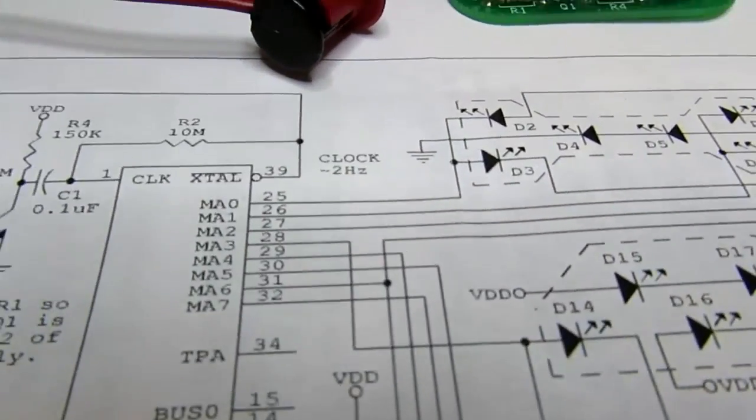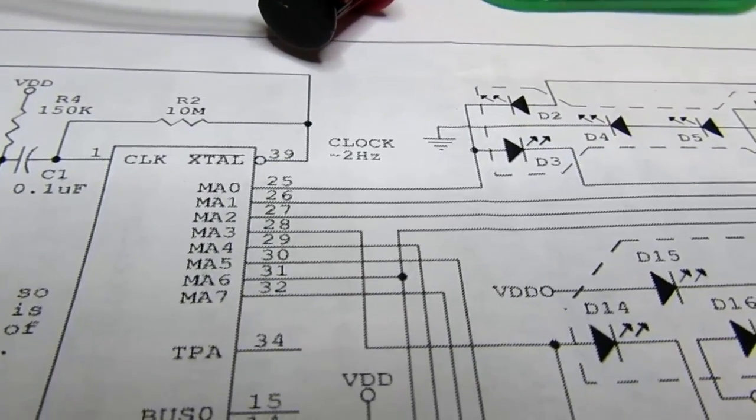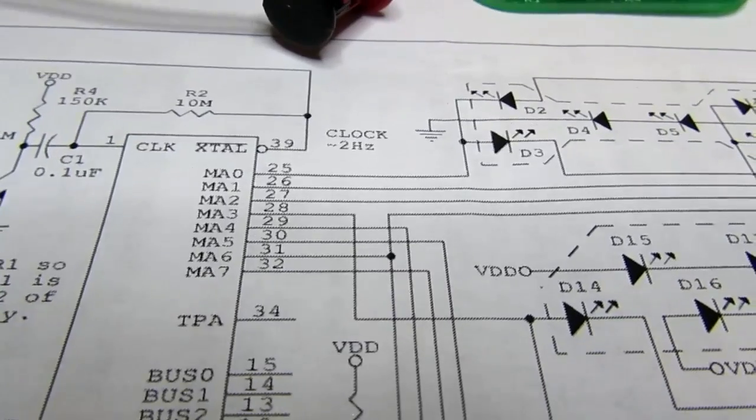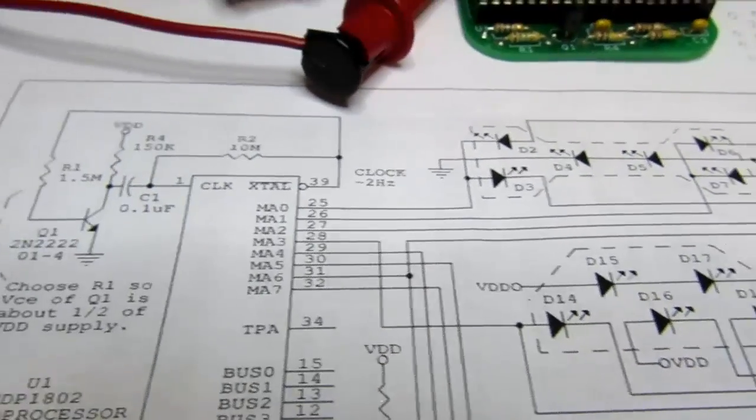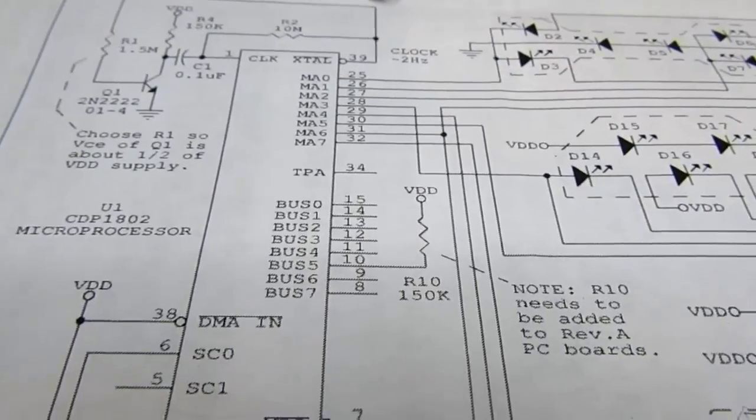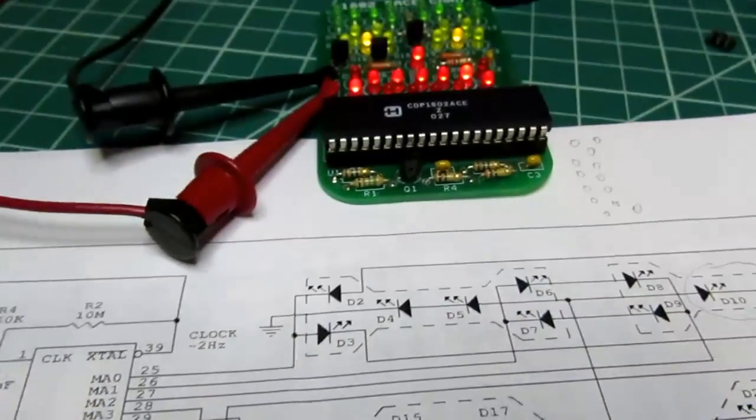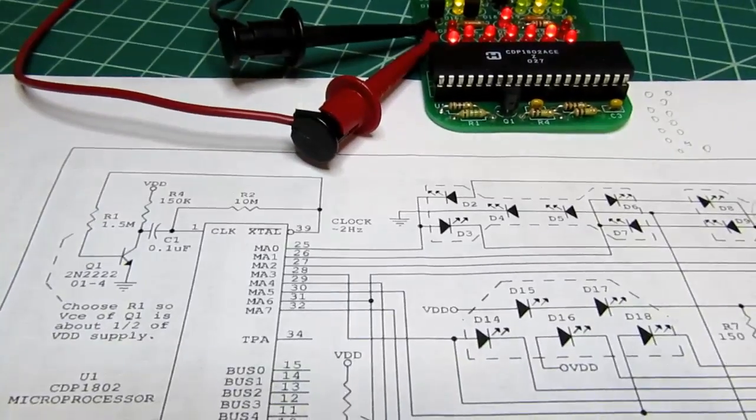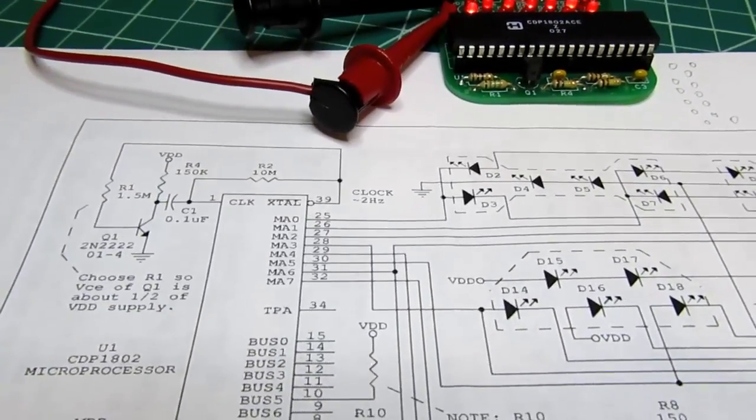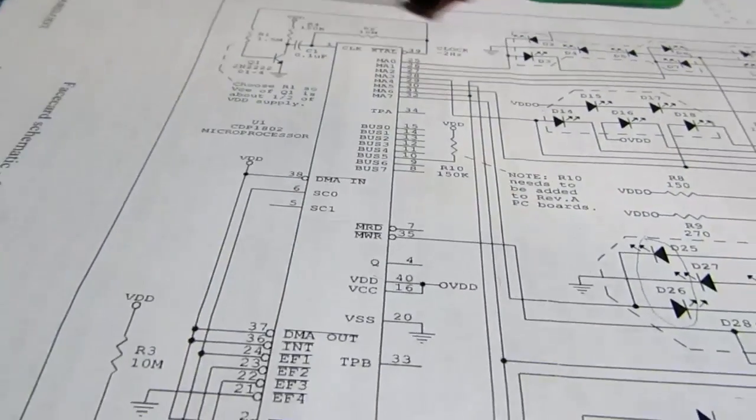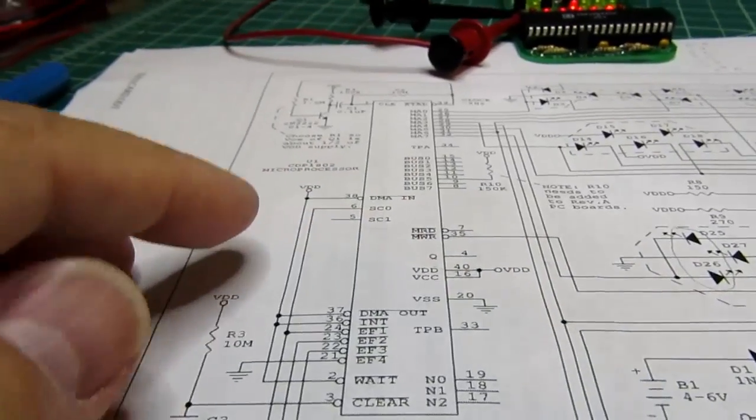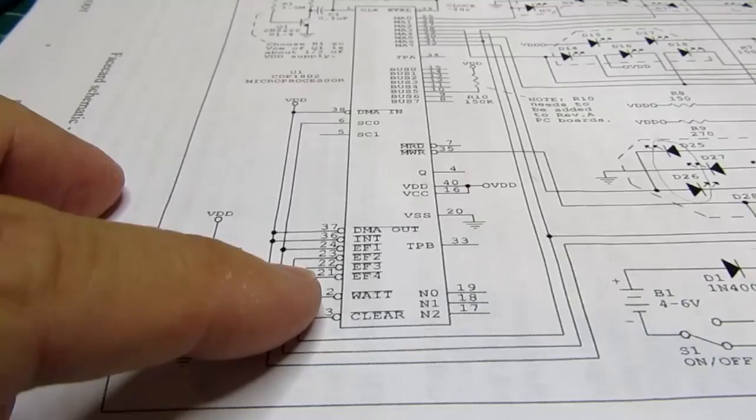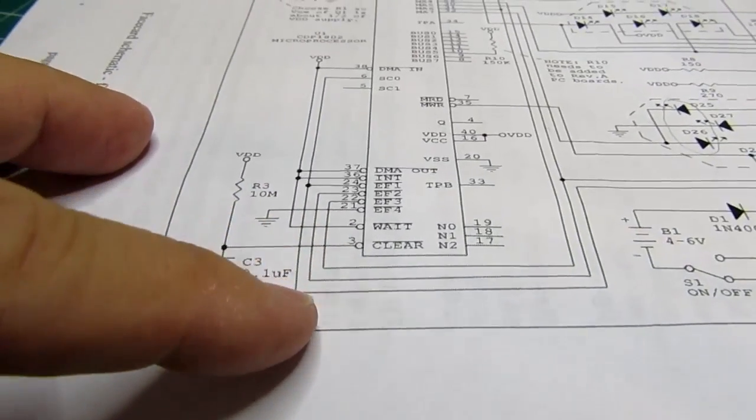It looks like it might be a little slower, but obviously every cycle of the clock does not correspond to a change of the LEDs because it has to do internal processing—a number of clock cycles per machine instruction.